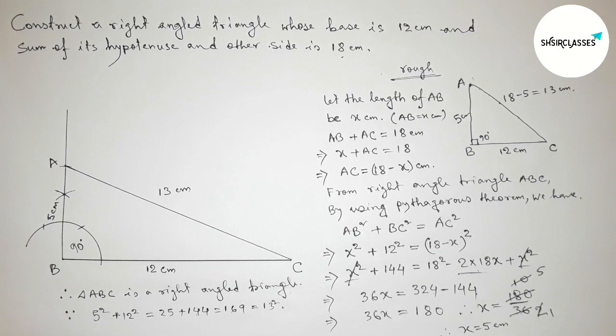The triangle ABC is a right-angled triangle as it satisfies the Pythagorean theorem. That's all — thanks for watching.